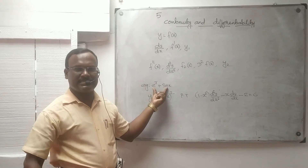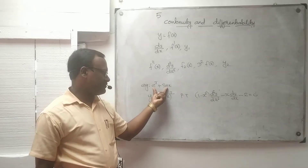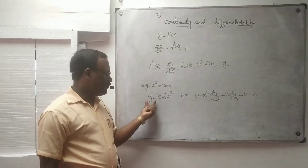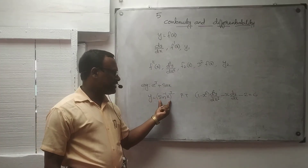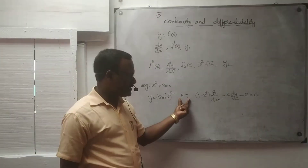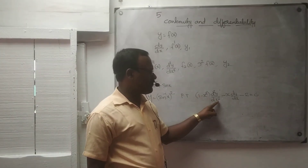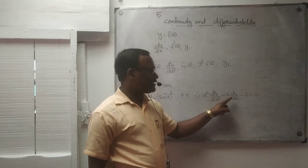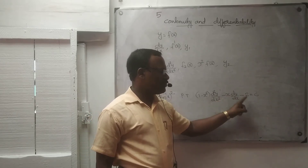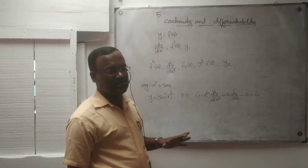The second step is: y is equal to sin inverse x, the whole square. Prove that 1 minus x squared, d squared y by dx squared, minus x dy by dx, minus 2 is equal to 0. Prove that question.